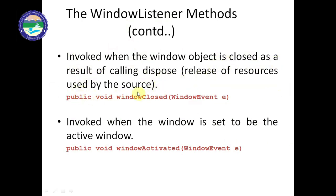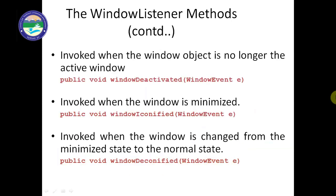windowClosed is invoked when the window object is fully closed as a result of calling dispose, which releases the resources used by the source. So we write all statements related to resource closing inside the windowClosed event handler. windowActivated is invoked when the window is set to be the active window. windowDeactivated is the opposite — it is invoked when the window object is no longer active.